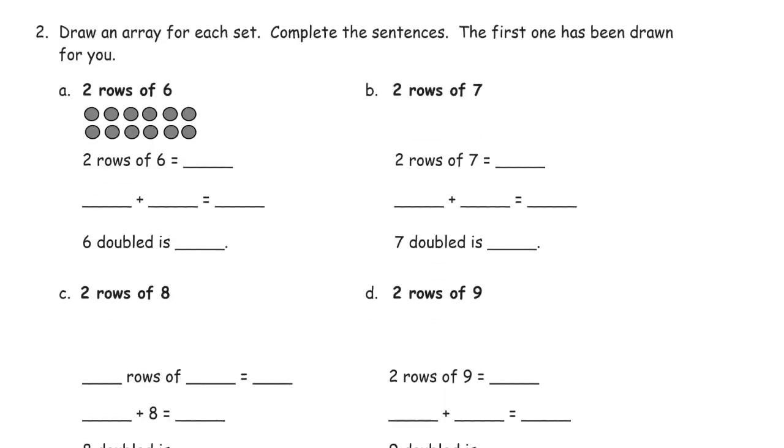And then, draw an array for each set. Complete the sentences. The first one has been drawn for you. So, this is the first one here. They already drew the array of little circles. And we still have to complete the sentence for this one. Two rows of six, right? So, that's six plus six. And if you know that doubles fact, it's twelve. That's it.